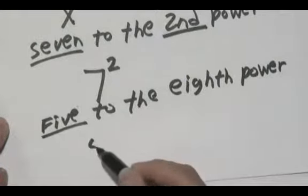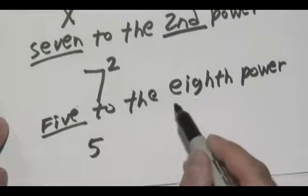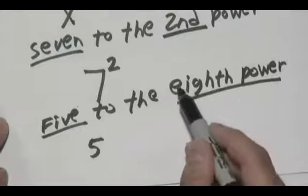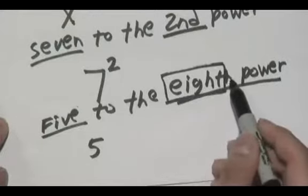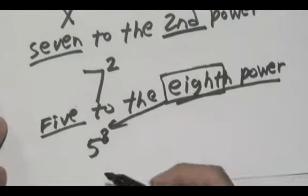The number that's mentioned here, 5, that's going to be your base. To the tells you what the exponent's going to be. 8th power means the number 8 is here in the exponent position. And that's all you have to do.